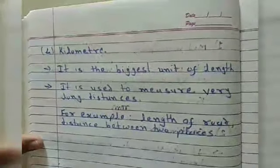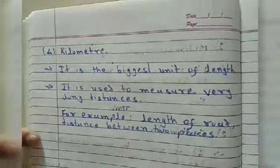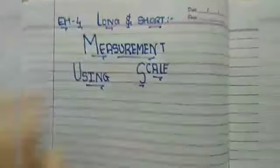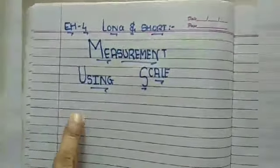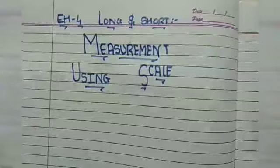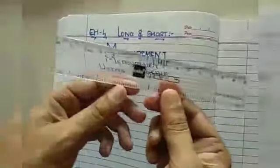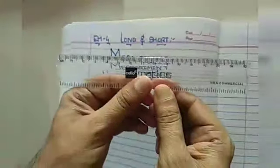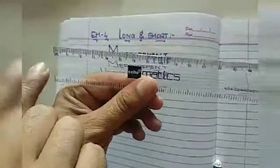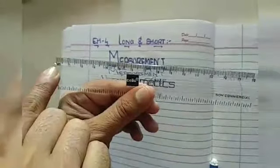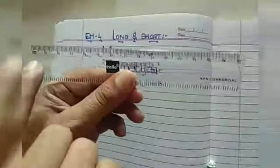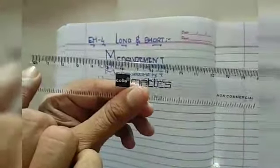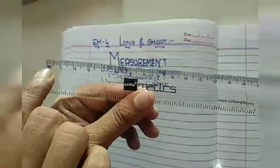Now we start our new topic: measurement using scale. First, let's understand the scale. Here I have a small scale. The numbers on this scale start from 0 to 15, and you can see 'cm' written on it, meaning centimeter.